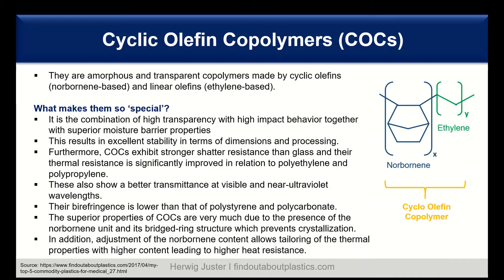COCs also offer better transmittance of visible and near ultraviolet wavelengths, and their birefringence is lower than that of polystyrene and polycarbonate. These superior properties are mainly due to the presence of the norbornene unit, which has a bridged ring structure that prevents crystallization and enables high transmittance, clarity, and shatter resistance. Depending on how much norbornene content is used, the thermal properties can be tailored — the higher the norbornene content, the higher the heat resistance.